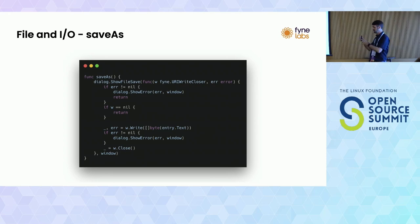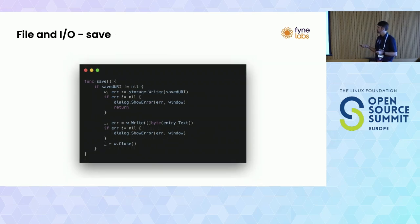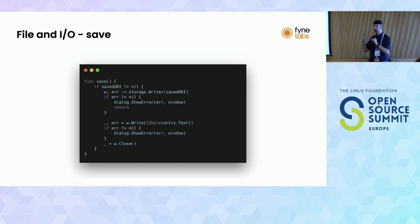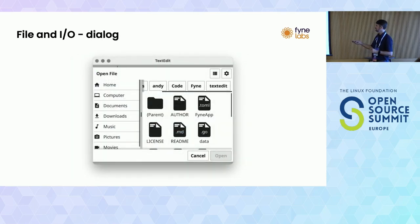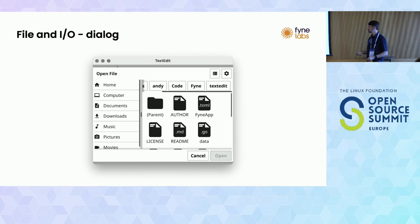Save as is kind of the same but inverse - we take the content of the widget, which is entry.text, and write it out to a file the user has requested. Save is a small improvement over save as: since we remembered the URI of the file that was opened, we just write the data out to that same location again. This results in Fyne's provided fallback file dialog, which is perfectly functional - users can browse their files and pick something to open or save.